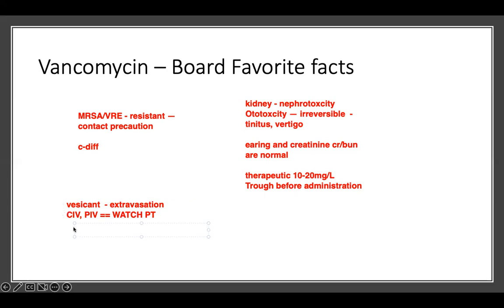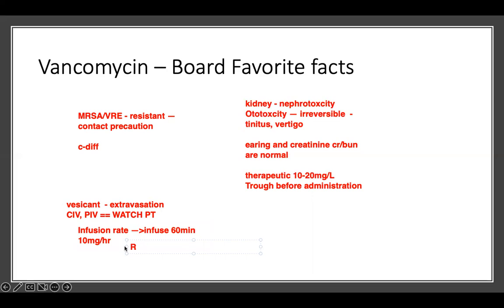The infusion rate is very important — how fast you infuse it. The idea is to infuse it over 60 minutes per gram, so 10 milligrams per hour. If I give you a dose like 500 milligrams of vancomycin, that means you should infuse it over at least five hours. Each gram will be infused over an hour. If you infuse it faster, the patient develops what we call Red Man Syndrome.